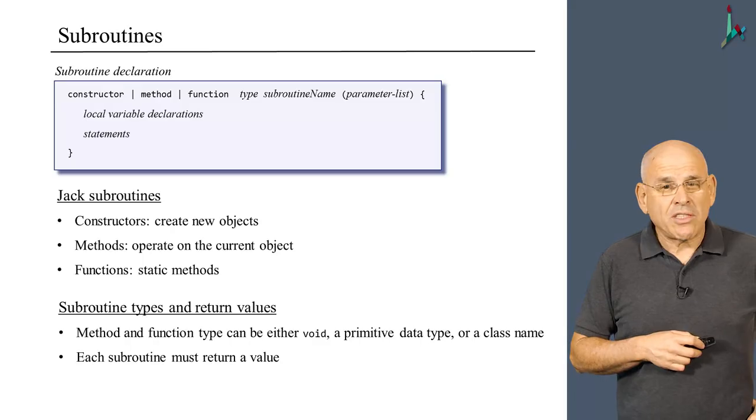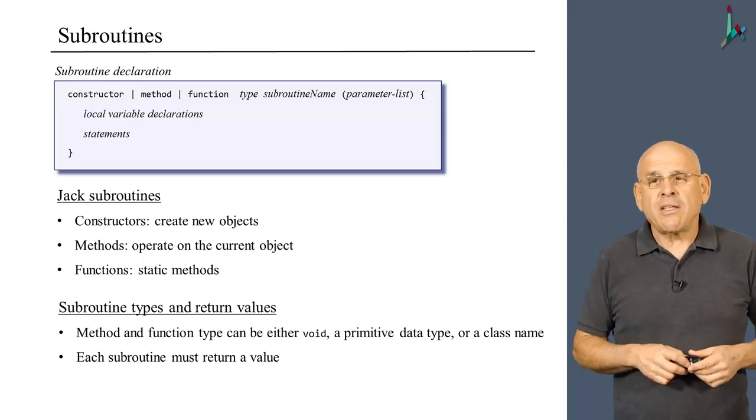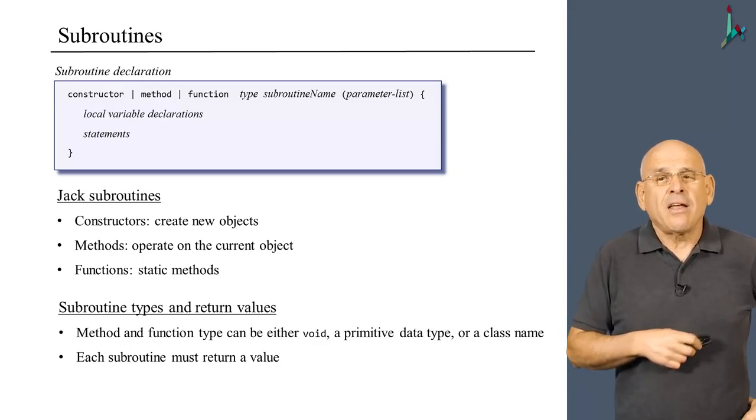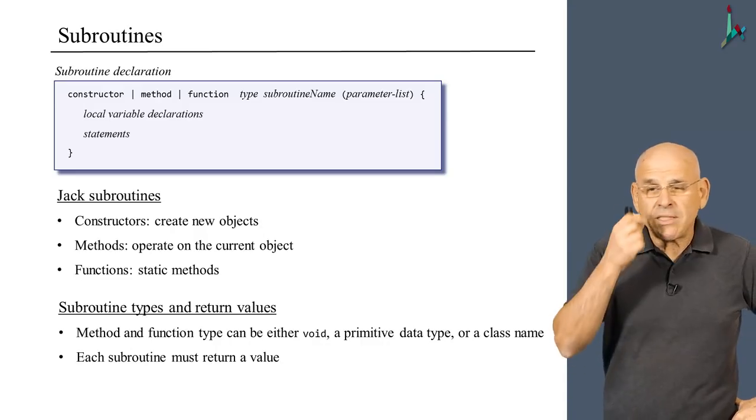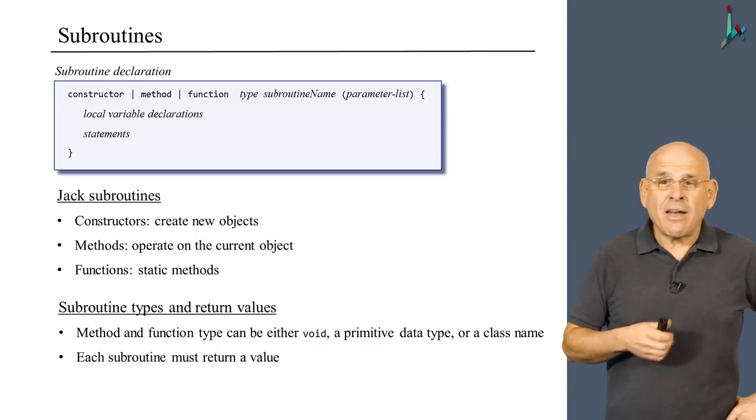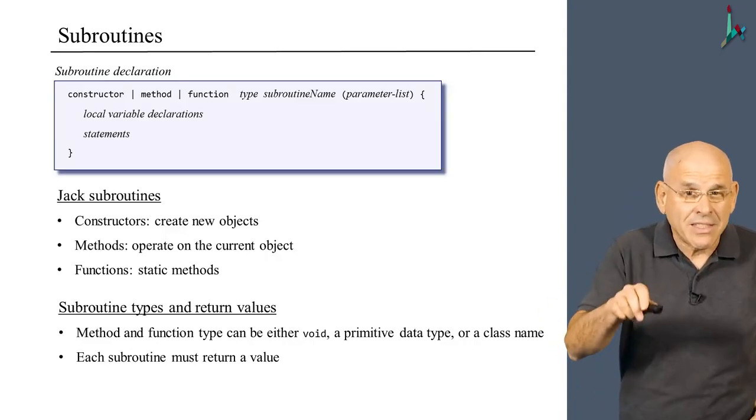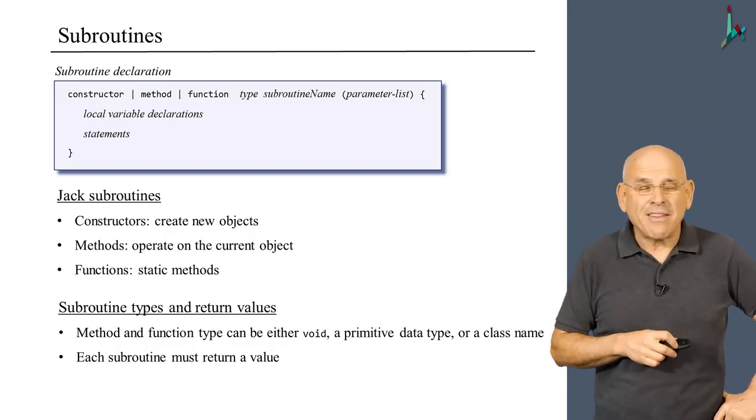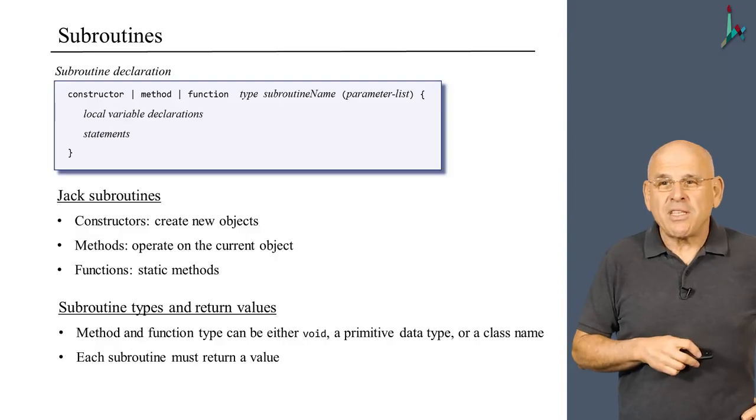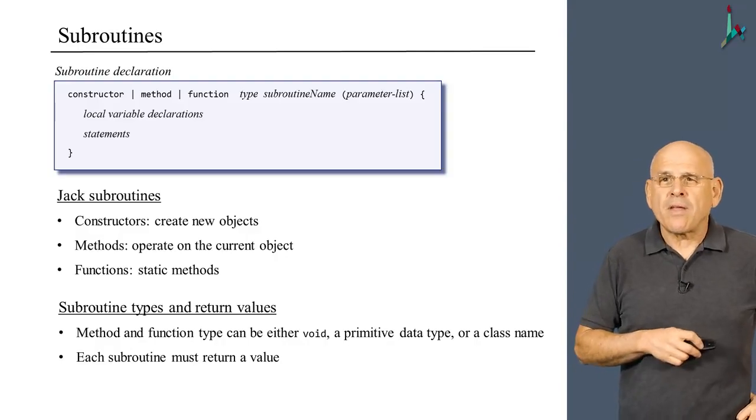The same is true for other languages as well, although in other languages it is aesthetically covered or implicitly done under the surface. A void method in Java has no return command, but in fact it does have a return which is planted by the compiler, as we'll see when we write the compiler.